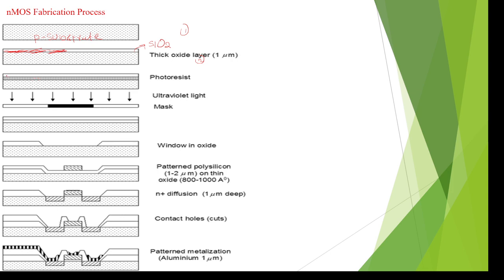In the third step, the overall surface is grown with a photo resist layer. This photo resist layer is deposited to get an even surface — any ups and downs present are leveled out by depositing the photo resist layer.